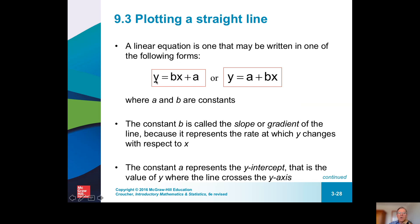Here's the formula: y equals bx plus a, or y equals a plus bx. B is the slope of the line — as x changes, how much will y change. A is the y-intercept. When x equals zero, we're left with just the y-intercept — that tells us where the line crosses. You only need two points to graph a straight line, so the y-intercept and the slope are enough.